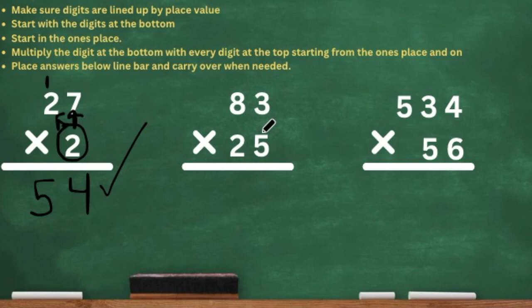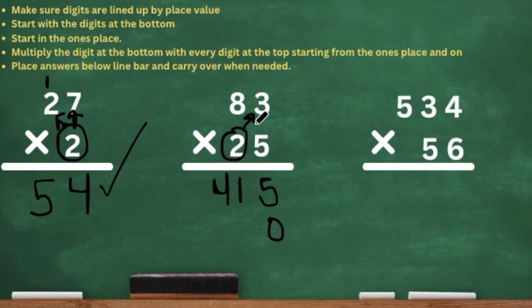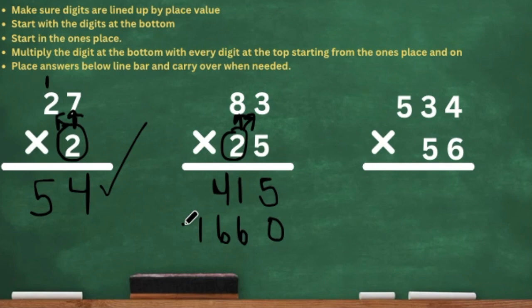Let's go to the next one — 83 times 25. We're going to start with the 5 at the bottom in the ones place and multiply it by every digit at the top. Five times 3 is 15 — put your 5 at the bottom, carry your 1. Now take that 5 and multiply it by the 8: 5 times 8 is 40, plus the 1, which is 41. Now that we're done multiplying the 5 by every digit at the top, we add our placeholder for the second row. Now we're on to the 2 — the 2 is in the tens place, so our answer starts in the tens place. Two times 3 is 6, so we put the 6 in the tens place. Then 2 times 8 is 16.